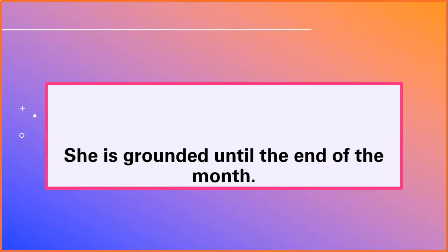She is grounded until the end of the month. 'She is grounded' is a complete thought — who's my subject? She. What's she doing? She is grounded. 'Until the end of the month' doesn't make sense by itself, so it's my dependent clause. If my dependent clause is at the end of the sentence, I don't need a comma.